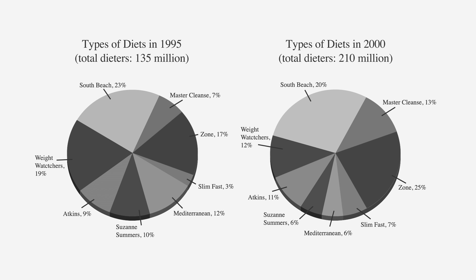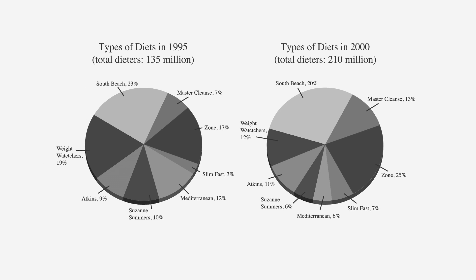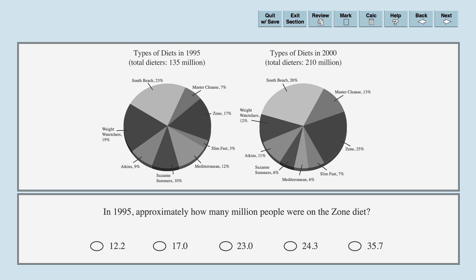These are the two charts we will need to look at for this question. The first question asks, in 1995, approximately how many million people were on the zone diet? The answer choices are 12.2, 17.0, 23.0, 24.3, and 35.7.